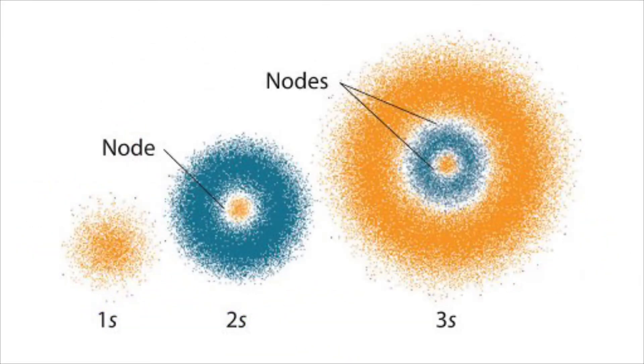In the image below, the greater the probability of finding an electron in a particular volume, the higher the density of the color in that region. The image on screen now shows the probability distributions for the spherical 1s, 2s, and 3s orbitals.